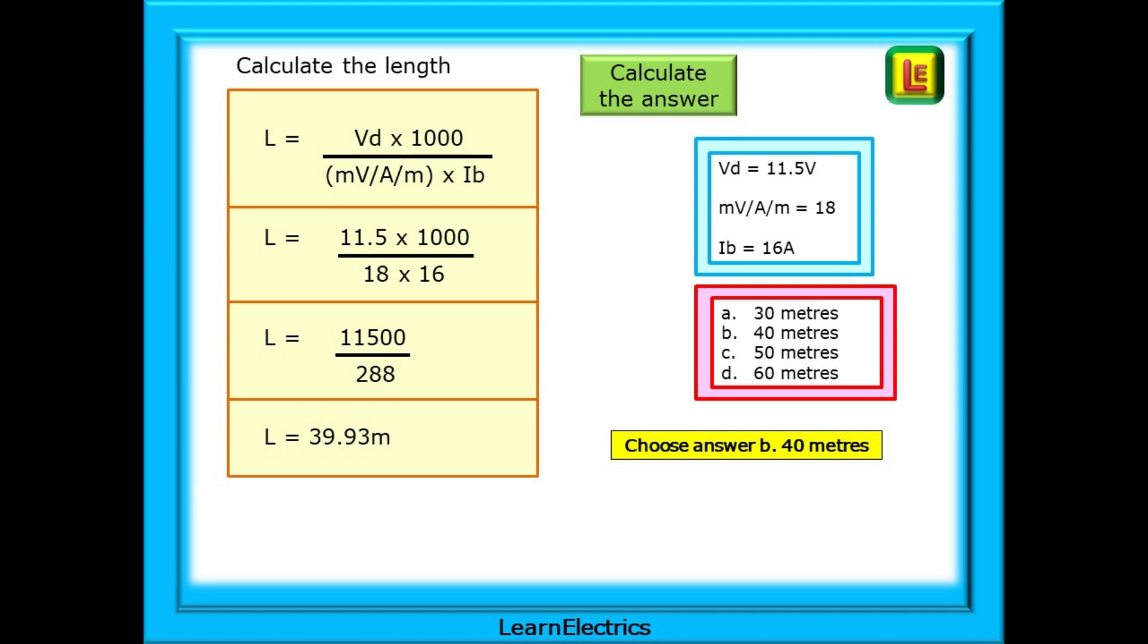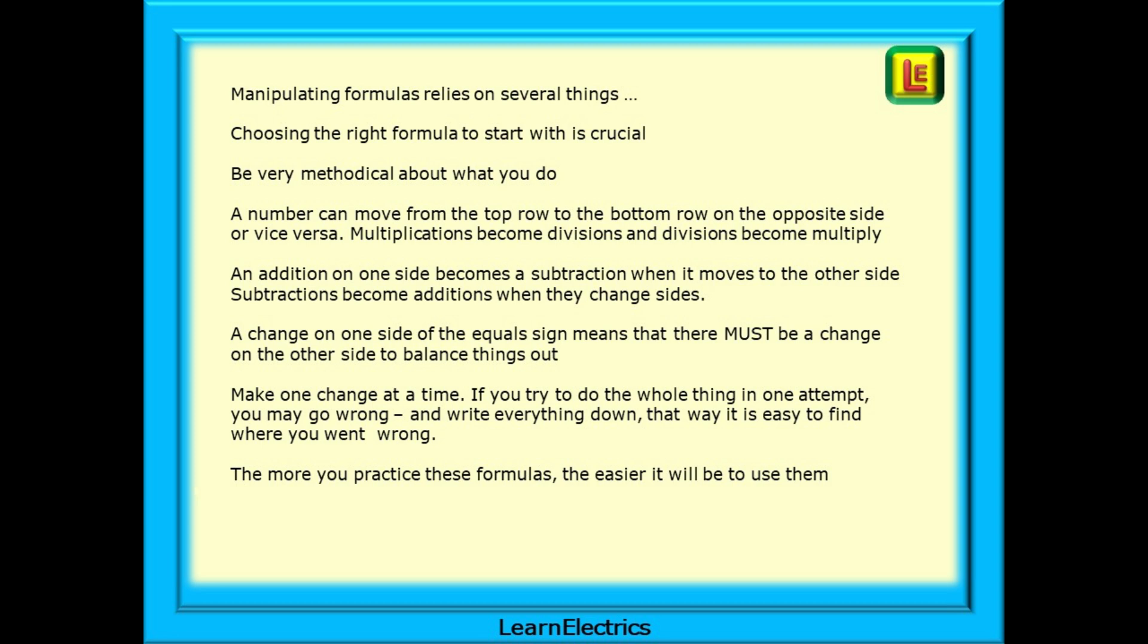Manipulating formulas relies on several things. Choosing the right formula to start with is crucial and be very methodical about what you do. A number can move from the top row to the bottom row on the opposite side or vice versa. Multiplications become divisions and divisions become multiplications. An addition on one side becomes a subtraction when it moves to the other side. And subtractions become additions when they change sides. A change on one side means there must be a change on the other side to balance things out. Make one change at a time. If you try to do the whole thing in one attempt, you may go wrong. And write everything down as you go along. That way, it's easy to find where you went wrong if your answer doesn't match any of the answer choices. The more that you practice these formulas, the easier it will be to use them.